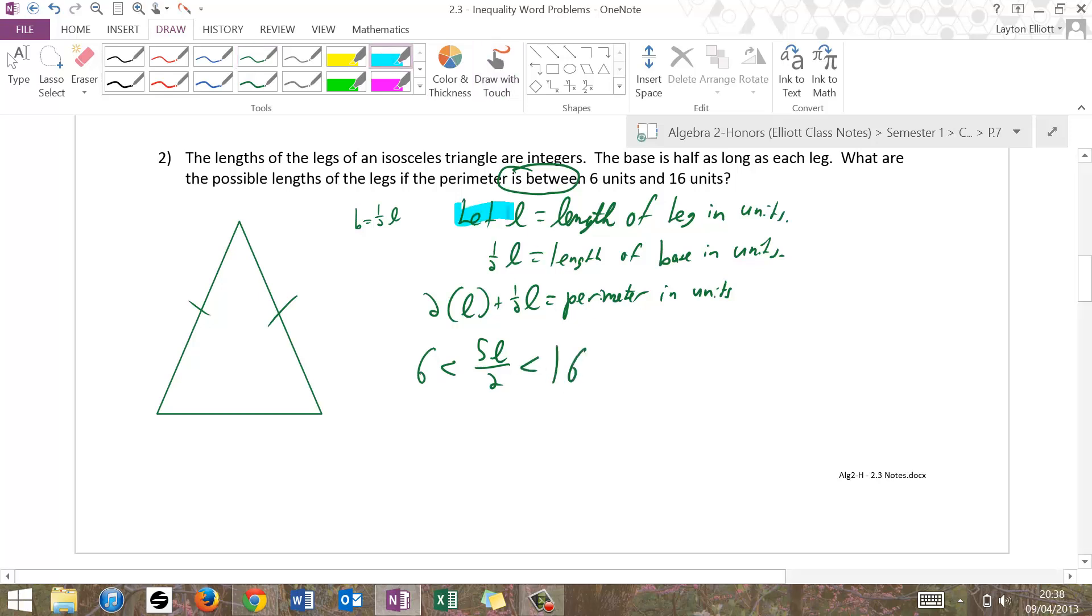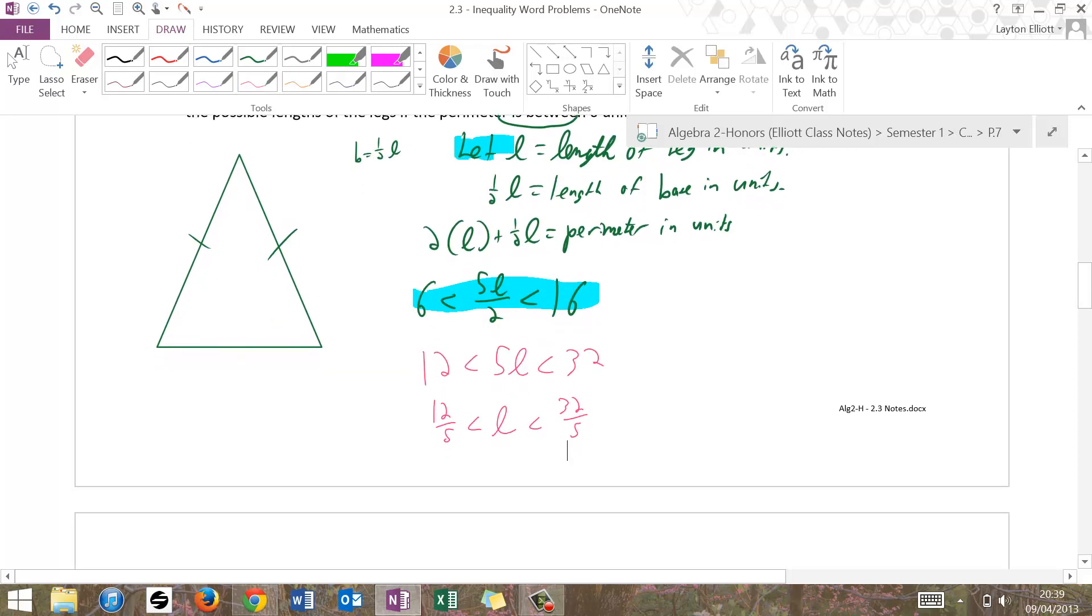So step 1, define. Step 2, create this thing. Step 3, solve that thing. Switch colors, just for kicks. Multiply both sides by 2. I can actually multiply by 2 fifths, but hey, multiplying by 2 is a little bit easier right now. And then divide by 5, and I have 12 fifths is less than the length, is less than 32 fifths. Typically, because these are lengths, we will convert these to decimals. So that's 2.4 less than L, less than 6.4.